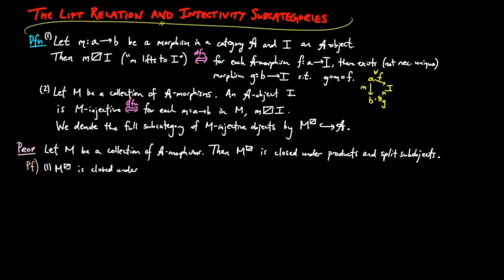We first show it is closed under products. Clearly, the terminal object, which is the empty product, is M-injective by the universal mapping property it enjoys.